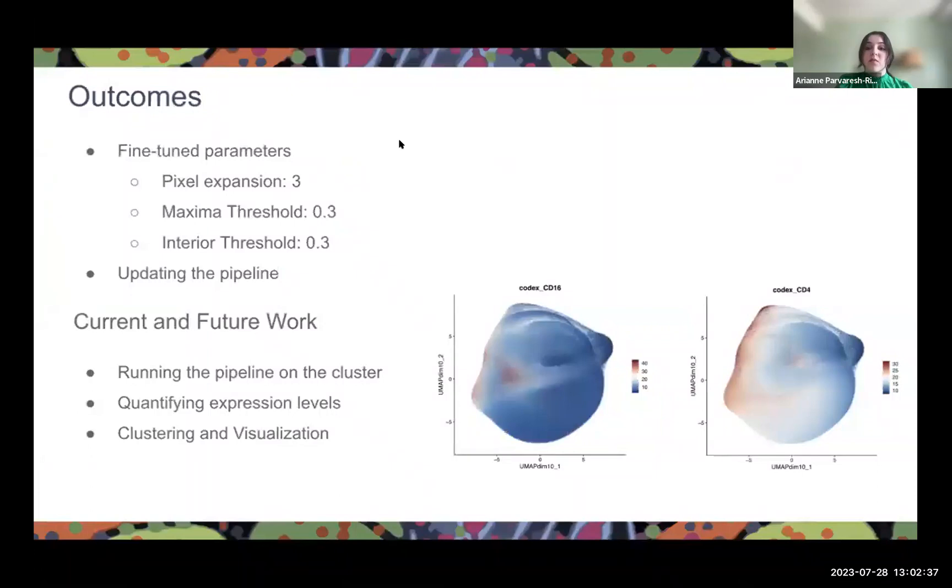The outcomes of my work after discussing it with my PI and collaborators was that the fine-tuned parameters we want to test on the clusters are a pixel expansion of 3, maximum threshold of 0.3, interior threshold of 0.3, and we will be updating the pipeline with these values. My current work at the TAN Lab involves running this updated pipeline on the cluster, quantifying expression levels and clustering and visualizing samples of pediatric gliomas.